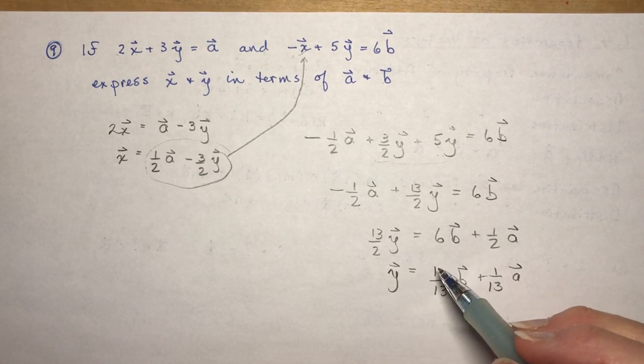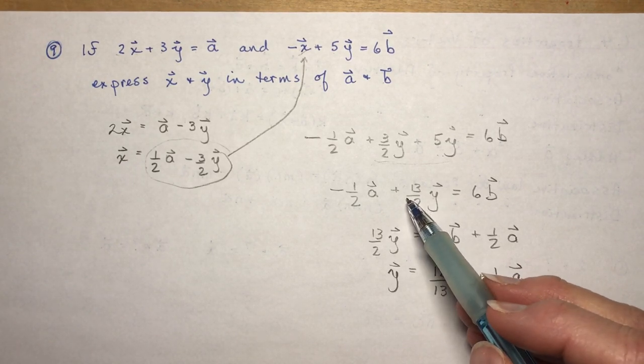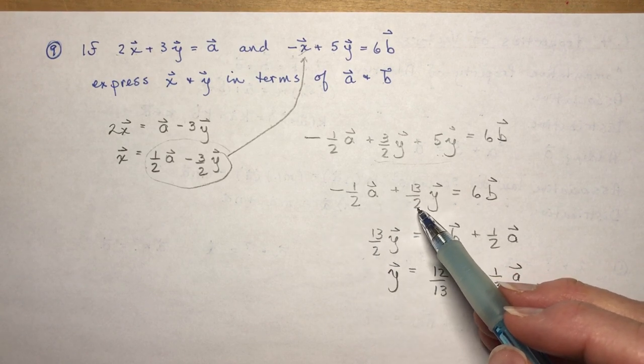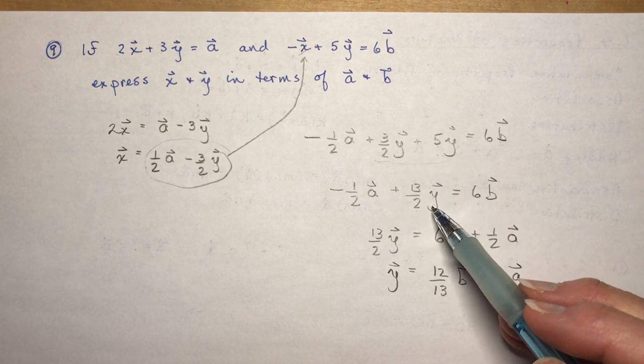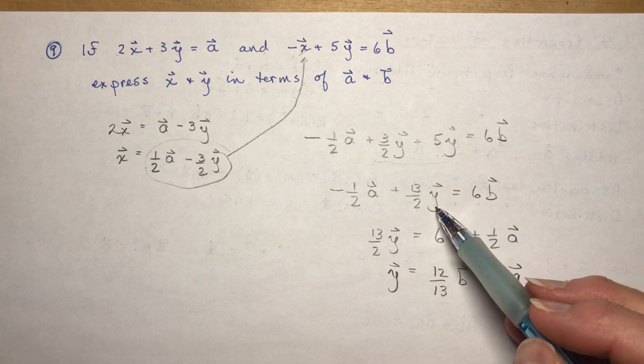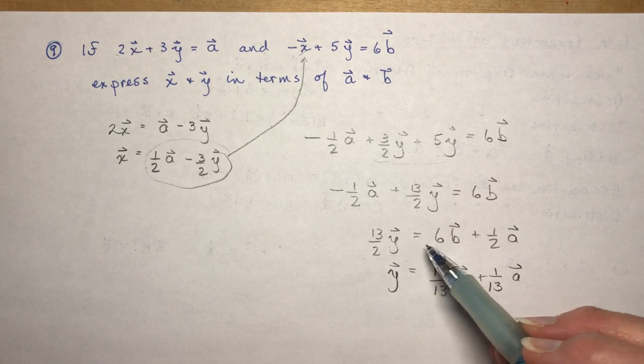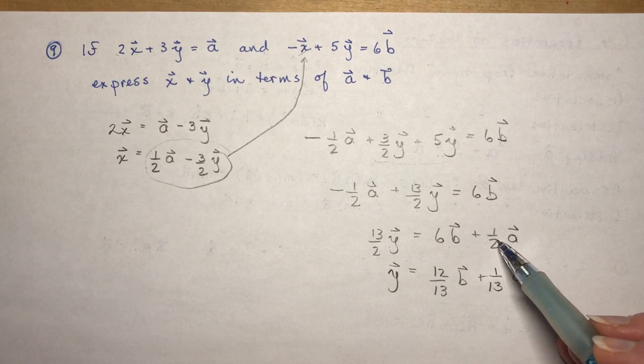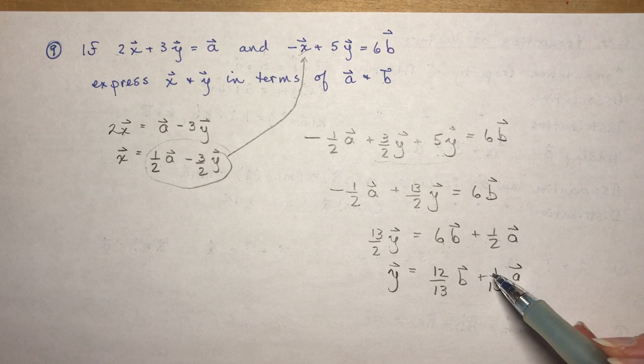Somehow I think I made a mistake because that's not what I got last time. Do you see the mistake? 13 vector y's... maybe I put a 13 here and it should have been a 3. Oh no, it was 10/2, 13/2 vector y's. It's always these little questions that make you make mistakes. 13/2 y = 6b - 1/2 becomes + 1/2 a. I multiply by 2/13, that gives me 12/13 b's and 1/13 a's.